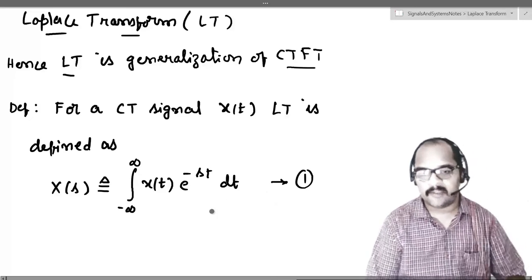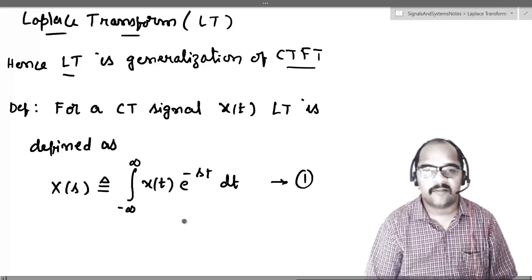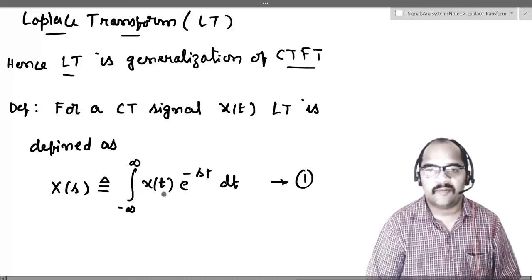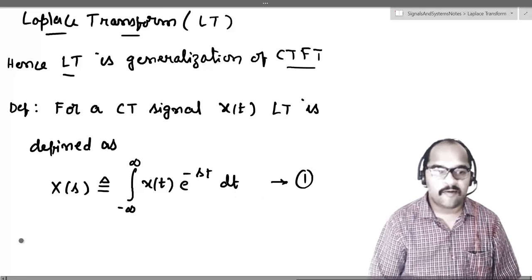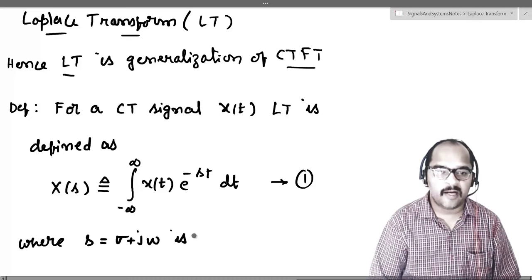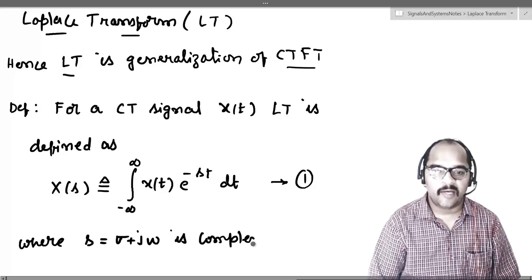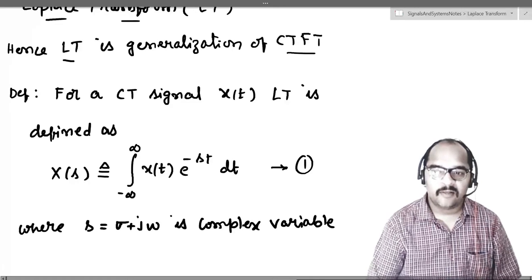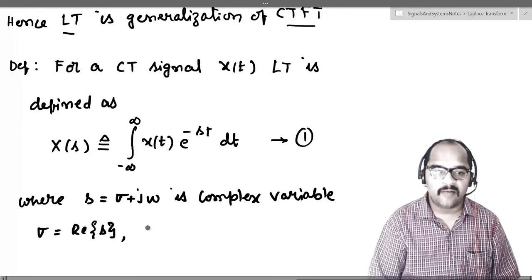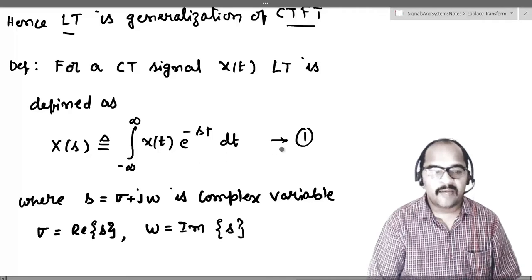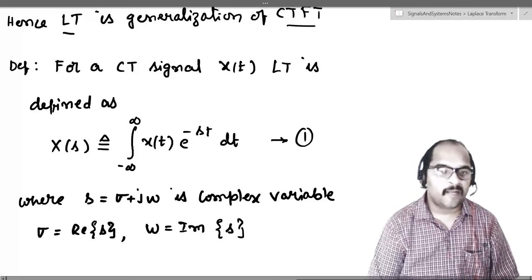X of s is equal to the integral from minus infinity to infinity of X of t multiplied with e power minus st dt, where s equals sigma plus j omega, which is a complex variable. Sigma is nothing but the real part of s, and omega is equal to the imaginary part of s. This is the way we define the Laplace transform.